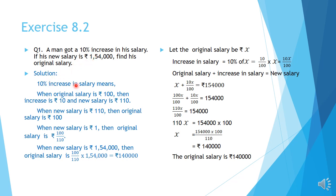10% increase in salary means when original salary is Rs. 100, then increase is Rs. 10 and the new salary is Rs. 110. We want the original salary, so when new salary is Rs. 110, original salary is Rs. 100. When new salary is Rs. 1, original salary is 100 by 110. When new salary is Rs. 1,54,000, original salary is 100 by 110 into 1,54,000. Simplifying: 10 by 11 into 1,54,000, and 1,54,000 divided by 11 gives 14,000, multiplied by 10 gives Rs. 1,40,000.